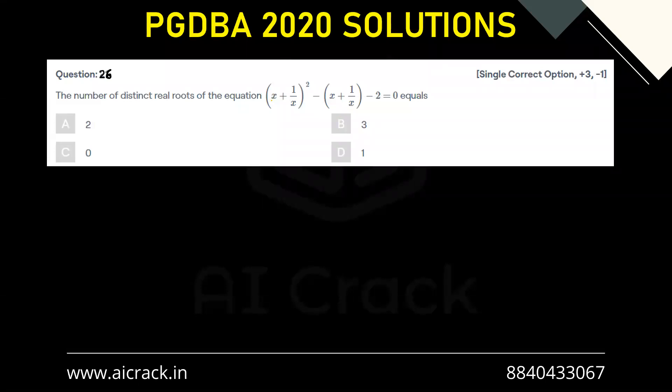We'll take x + 1/x as, let's say, y. So it's given that y² - y - 2 = 0, so that basically means (y - 2)(y + 1) = 0.